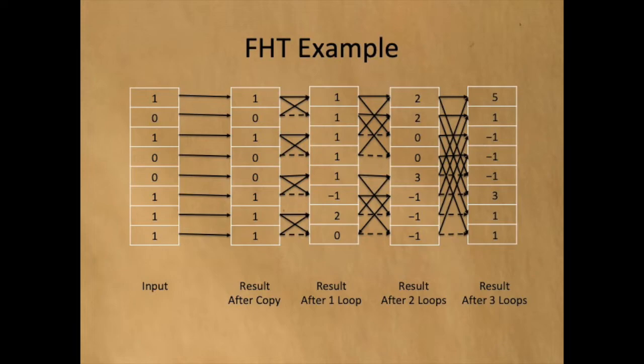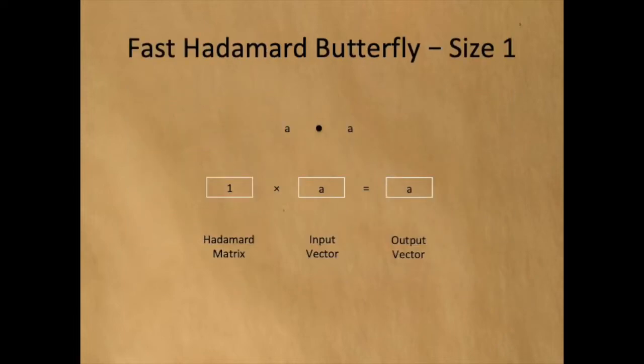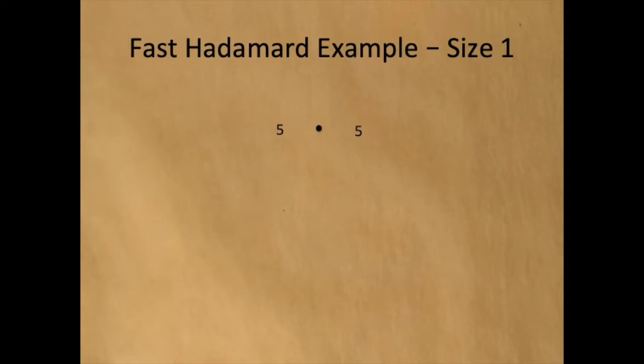This shape is called a butterfly, and we will delve into butterflies for a moment. The butterfly of size 1 is simply a dot. If the input vector has length 1, then the output vector is identical. If the input vector contains a single element 5, then the output vector contains a single element 5.